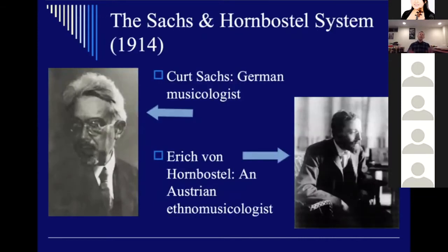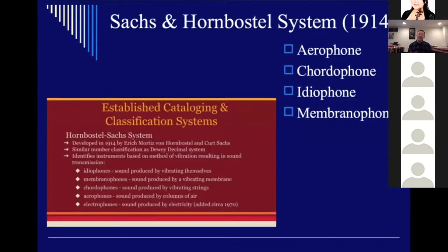With that in mind, most ethnomusicologists and the large majority of musicologists now use the Sachs-Hornbostel system. It was devised in the early 20th century by German musicologist Kurt Sachs and Austrian ethnomusicologist Erich von Hornbostel. They took the Mahillon system, identified its inherent flaws, and created a system of four categories based upon the principle of sound and pitch: aerophones, cordophones, idiophones, and membranophones.